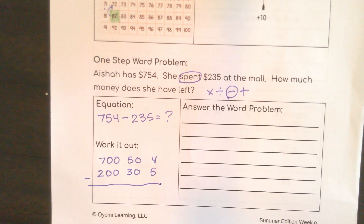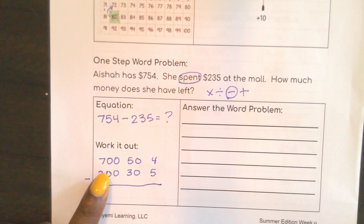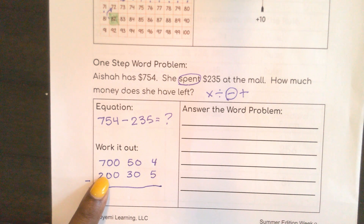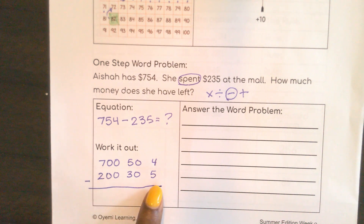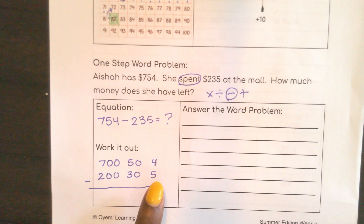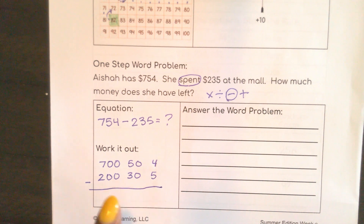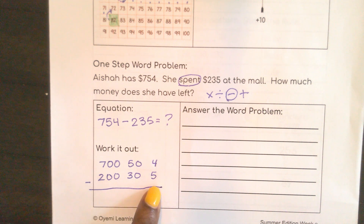Remember, we always start in the ones place. Think about yourself growing up — you didn't start with your 100th birthday. You started at your first birthday. So start in your ones place, then tens, then hundreds. God willing, you make it to your hundredth birthday. So we start in our ones here.